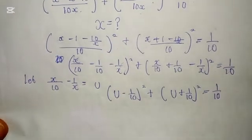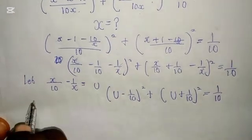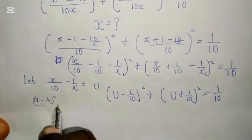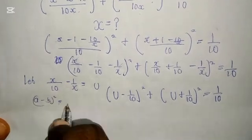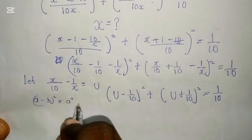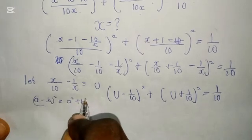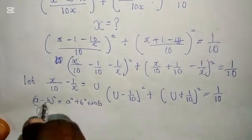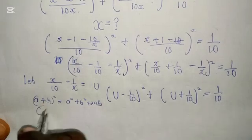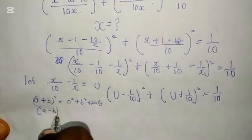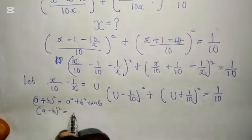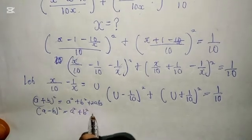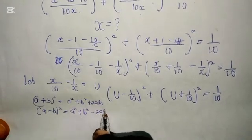So let's expand. Using the algebra: when you have a plus b all to the power of 2, this is equal to a squared plus b squared plus 2ab. And when you have a minus b to the power of 2, this is a squared plus b squared minus 2ab.